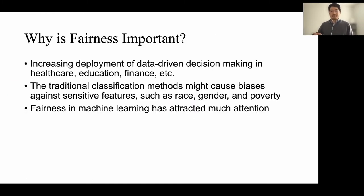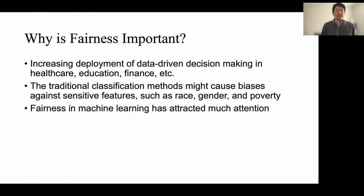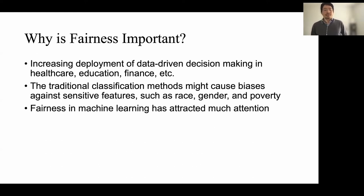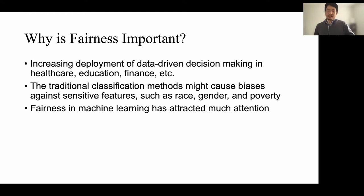As you can see, fairness is quite important now, and there are tons of examples — if you just Google it, you'll see many coming up. The reason is we are now trying to use machine learning algorithms and data-driven decision-making approaches. Classification models can cause bias for sensitive features such as gender, race, or income levels. Without addressing this, the bias — whether due to training, the dataset, or inherent model behavior — can do a lot of damage to the entire society.